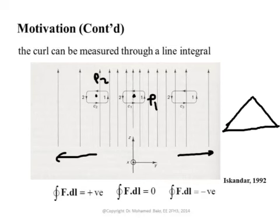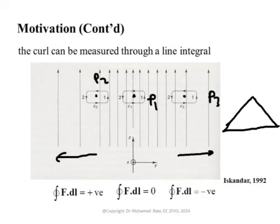Taking a third point P3 on the right side: again two segments give zero, one gives a positive answer and one a negative answer, but here the negative segment has a higher value than the positive segment due to the velocity profile — so the curl is negative. The key insight: to measure the curl normal to a certain plane at a point, create a tiny closed contour around that point, measure the line integral circulation, and determine whether it is positive, negative, or zero.